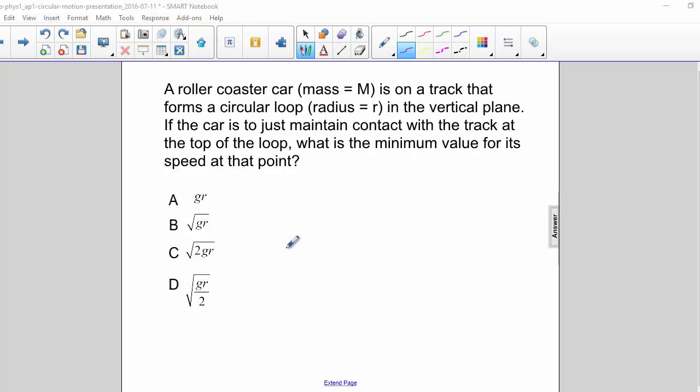A roller coaster car is on a track that forms a circular loop in the vertical plane. If the car is to just maintain contact with the track at the top of the loop, what is the minimum value for its velocity at that point?